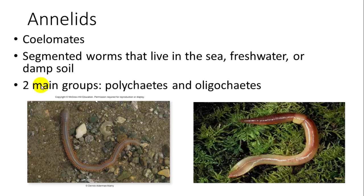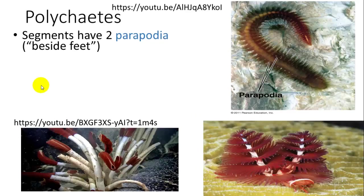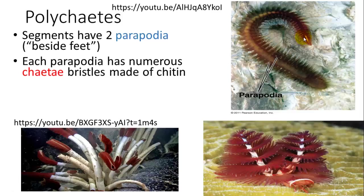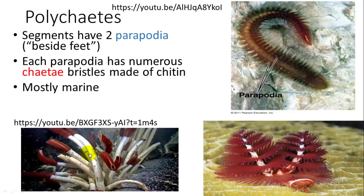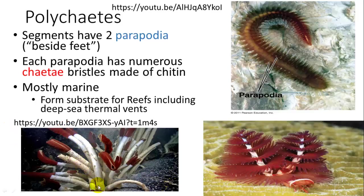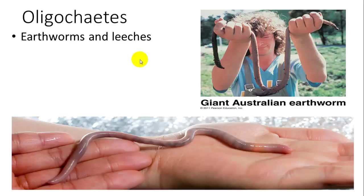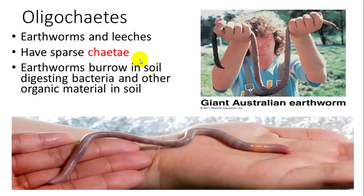Annelids are coelomates — segmented worms living in the sea, freshwater, or damp soil. The two main groups are polychaetes and oligochaetes. Polychaetes have two parapodia — little extensions off each segment meaning 'beside feet' — each with numerous hair-like extensions called chaetae made of chitin. They're mostly marine, including tube worms that build calcareous tubes forming reefs for other organisms.